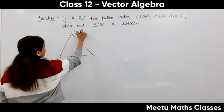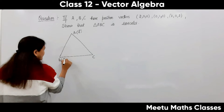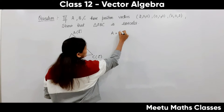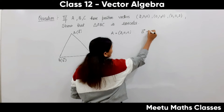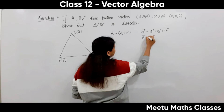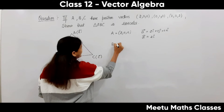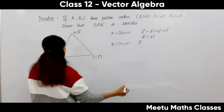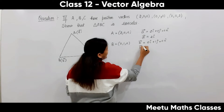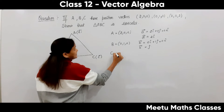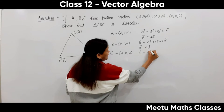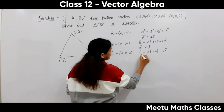Let the position vector of A be vector A, position vector of B be vector B, and position vector of C be vector C. We are given that point A equals (2,0,0), so vector A is 2i + 0j + 0k, or simply 2i. Similarly, point B is (0,1,0), so vector B is 0i + 1j + 0k, which we write as j. And point C is (0,0,2), so vector C is 0i + 0j + 2k, which we write as 2k.